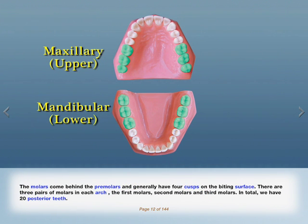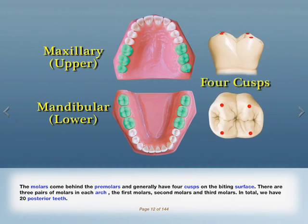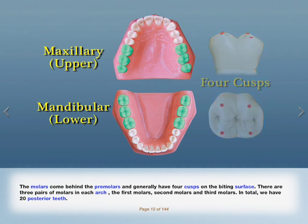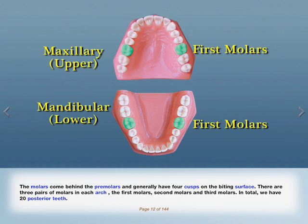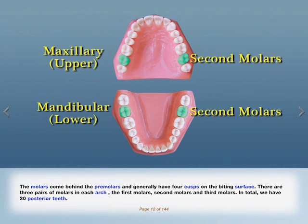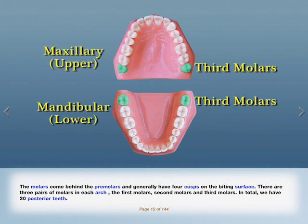The molars come behind the premolars and generally have four cusps on the biting surface. There are three pairs of molars in each arch: the first molars, second molars, and third molars.